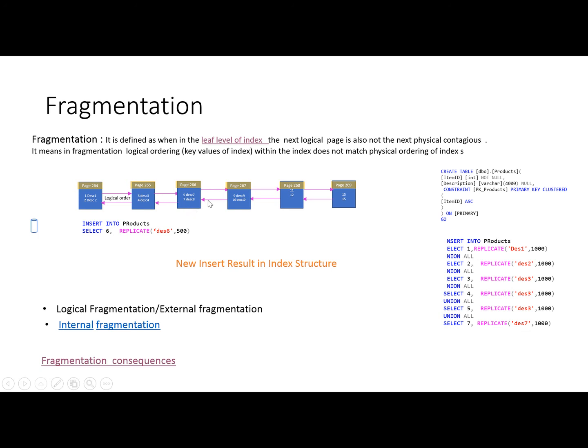When fragmentation happens, suppose this is our products table. On this products table we have a clustered index and the clustered index key is item ID. All the items which we are inserting on this table, like the data which we have inserted—1, 2, 3, 4, 5, and 7—all this data in this table will be arranged on the base of this index key item ID.